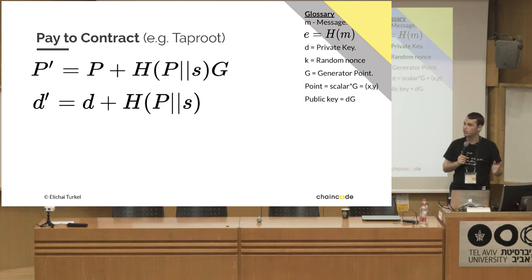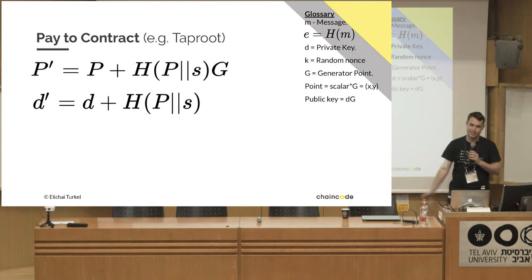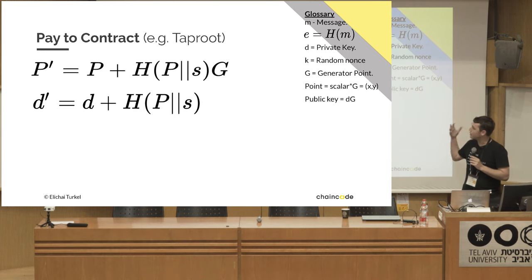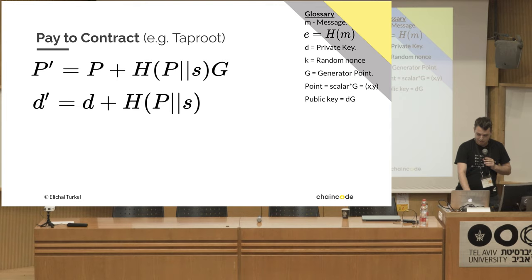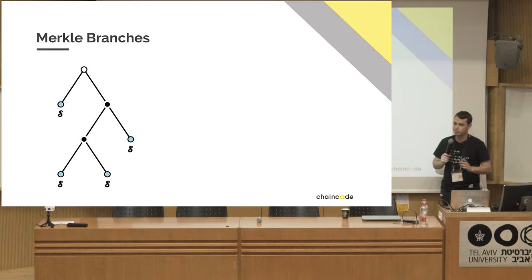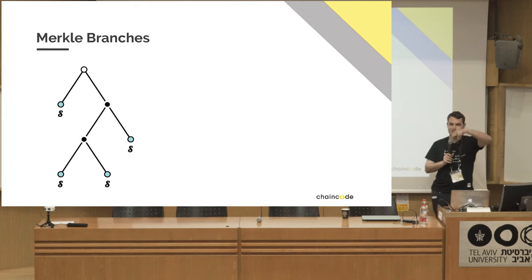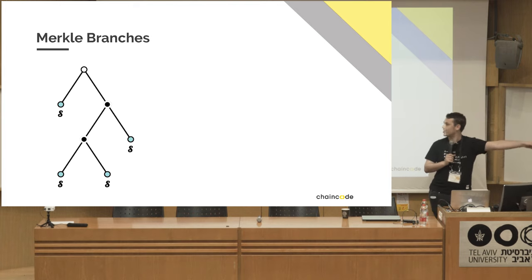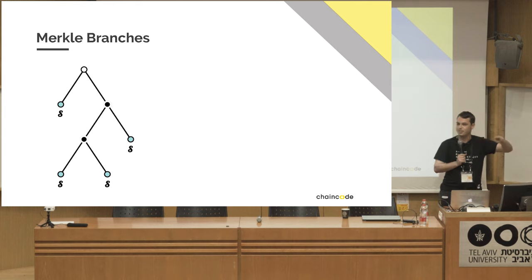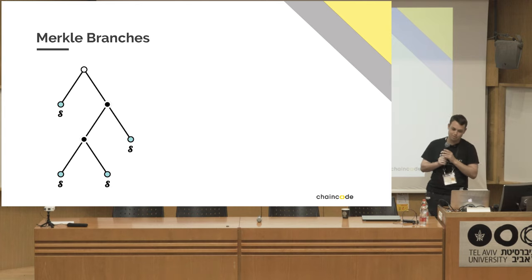This is currently not possible in Bitcoin, but Taproot gives us something like that. Taproot also uses Merkle branches: you take two leaves, hash them to get a branch, hash that with the adjacent branch or leaf, and continue up until the root.